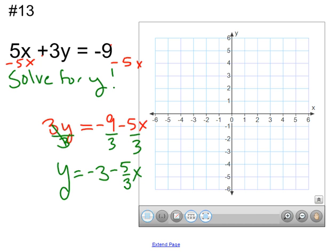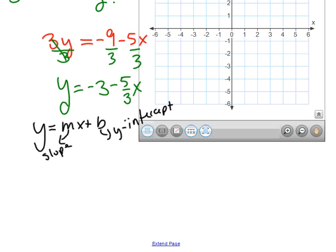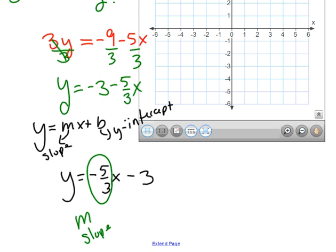Well, we're used to our line being in the format y equals mx plus b, where b is my y-intercept and m is my slope. So this one's not quite in that form, but we can easily make it that form by just switching the negative 5 thirds x first and writing minus 3 second. So, you ask yourself, what is my slope? And your slope is negative 5 thirds. And my y-intercept is negative 3. That's my b value.